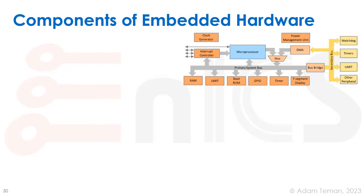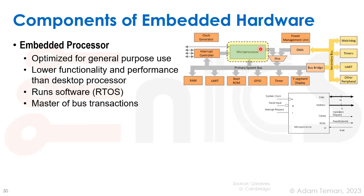I'm going to use a picture based on something I found on ARM to go over the different components, because this is the type of block diagram you may find in various embedded systems. At the heart of it, we almost always have one or more embedded processors, and that's because we want programmability. We'll discuss that in the next lecture, but we really want to be able to write some sort of software and higher-level code to carry out algorithms and control the whole system.